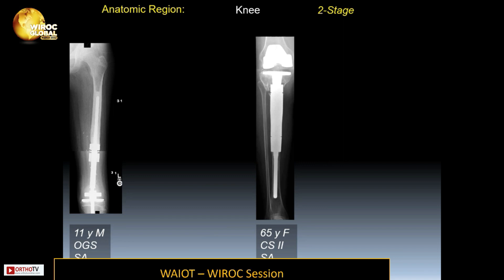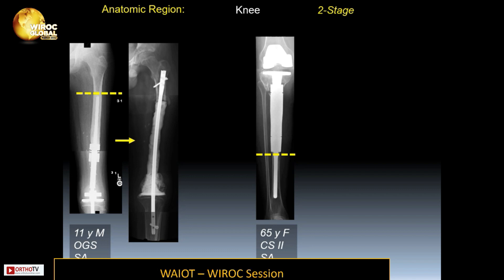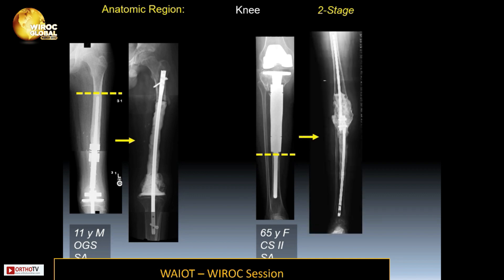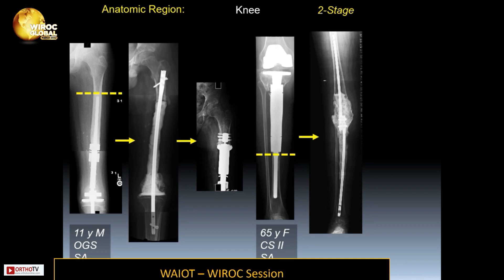Two additional cases are presented: an 11-year-old with distal femur osteogenic sarcoma and Staph aureus, and a 65-year-old female with grade 2 chondrosarcoma and Staph aureus, both left with very short bone segments. The osteogenic sarcoma patient was treated with an IM nail and antibiotic spacer; the 65-year-old was treated with two long IM nails and a polymethylmethacrylate spacer. The 11-year-old was subsequently converted to a compress-type stem proximally.